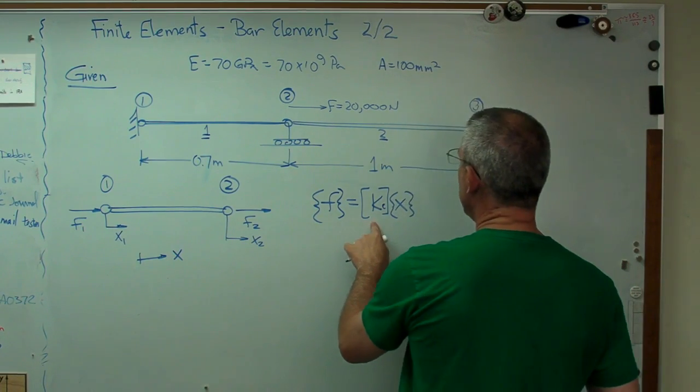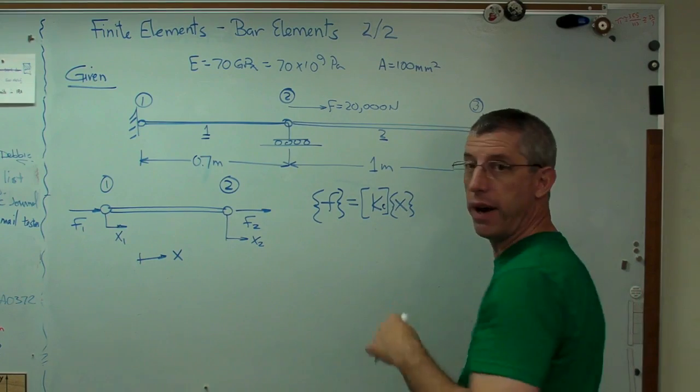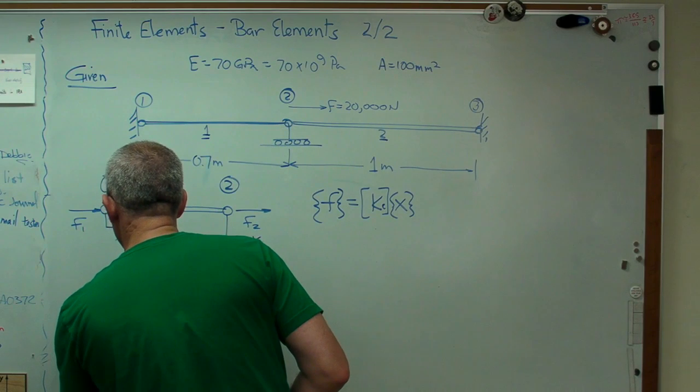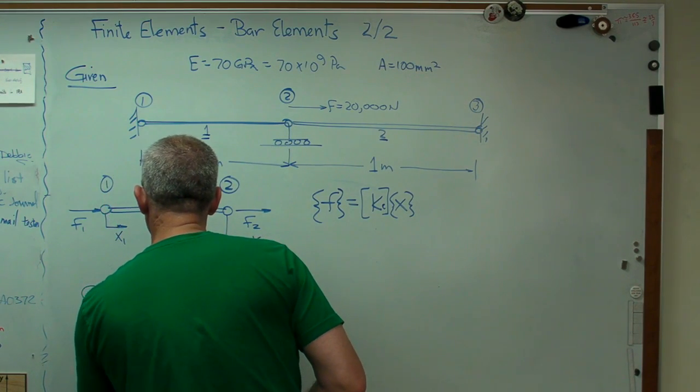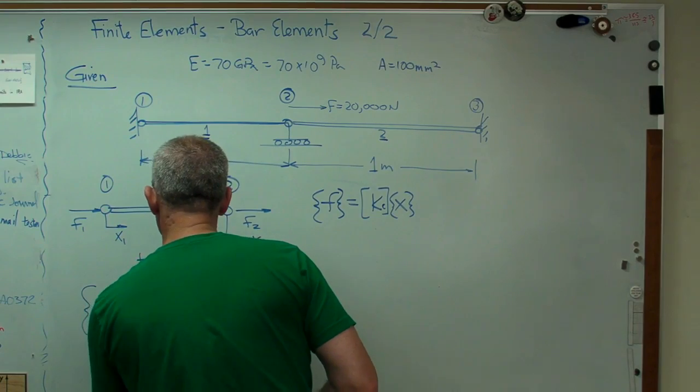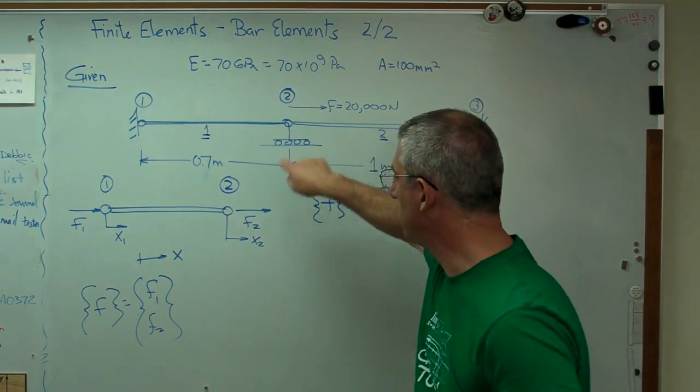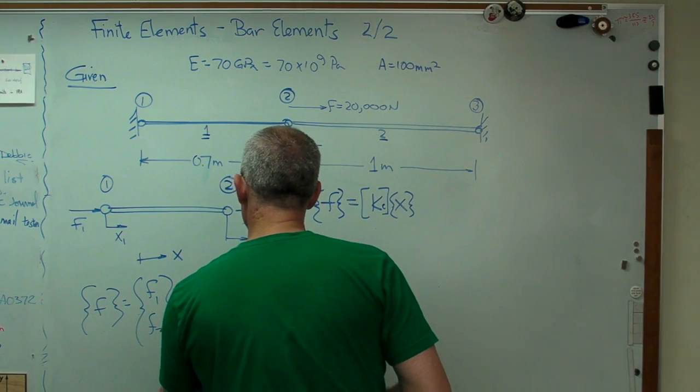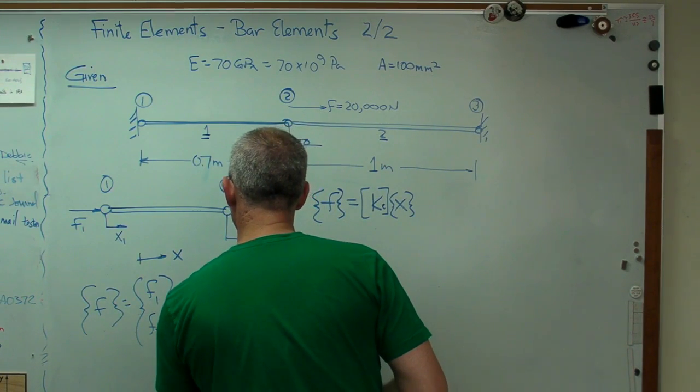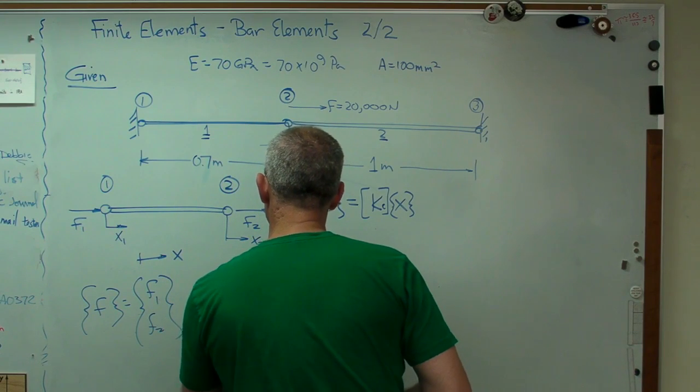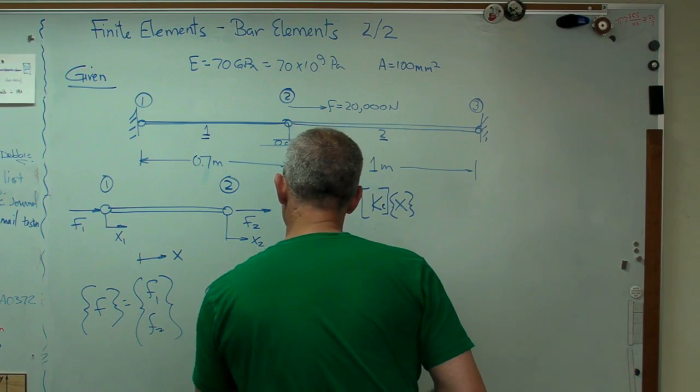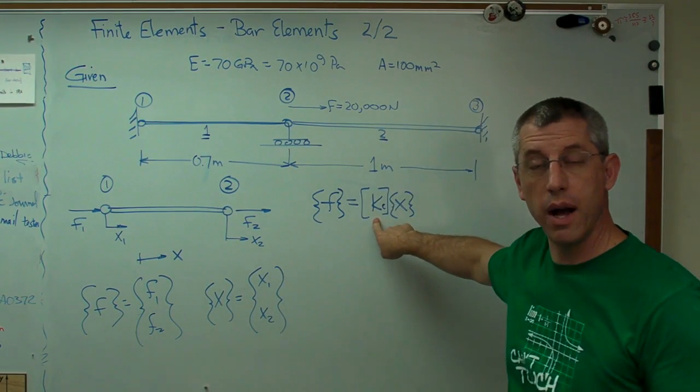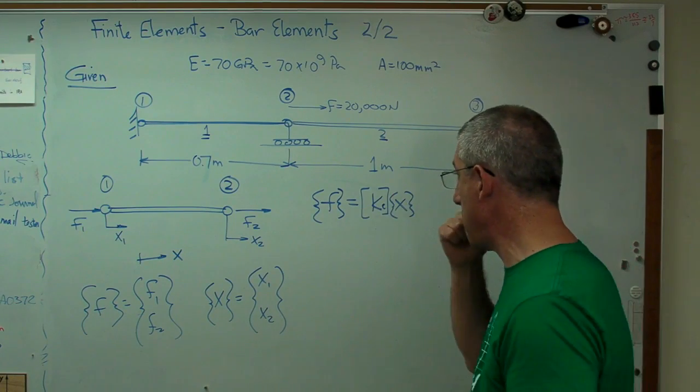So force vector, stiffness matrix, displacement vector. Well, we know that f equals f1, f2. And we have an external force up here, so we're going to know what that is in here in a minute. x looks just like this. The only part which we're working on now is this thing right here, this element stiffness matrix. We're going to do that right now.